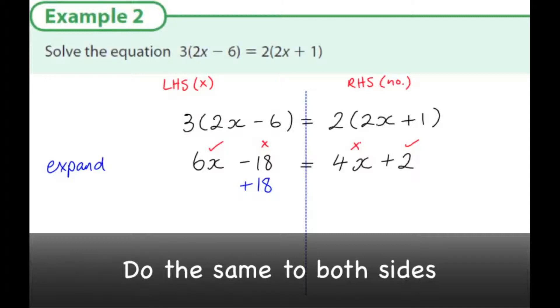So I'm going to do the same thing to both sides. I'm going to add 18 to both sides to get rid of the minus 18. I also want to get rid of this 4x. So what I'm going to do that's fair to both sides, I'm going to subtract 4x. Now this is fair because I'm doing the same thing to both sides.